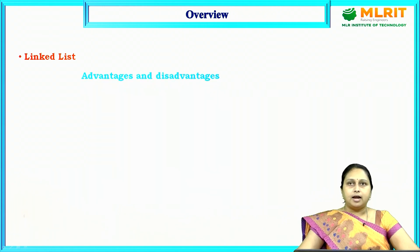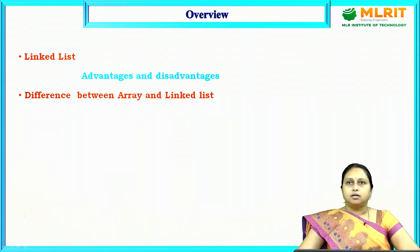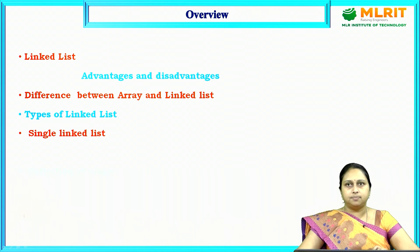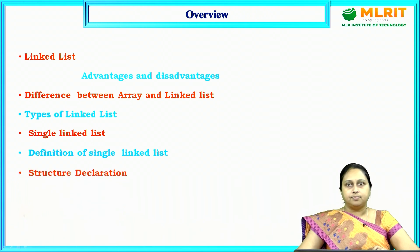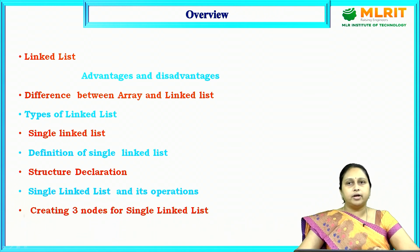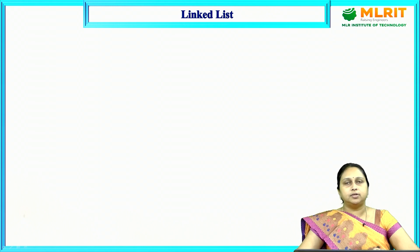We will be discussing about the linked list, and then we will see the advantages and disadvantages of the linked list. Then we will see the difference between array and linked list, then types of linked list, then we will look into the single linked list concept and its definition. At the end we are going to discuss about creating three nodes for a single linked list.